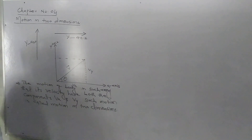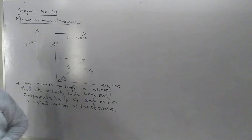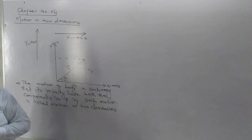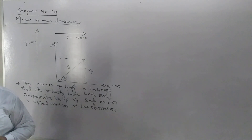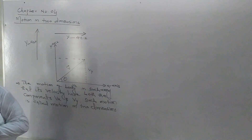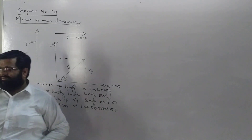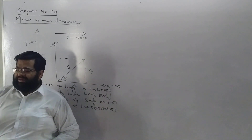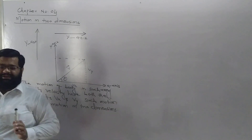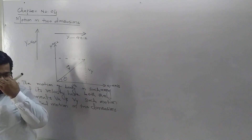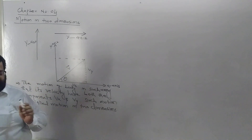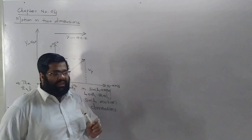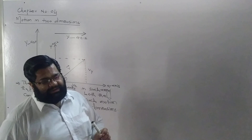Simply, as explained in this chapter, when the motion has both an x-component and a y-component, that motion is called motion in two dimensions. That is the simple explanation of this chapter.